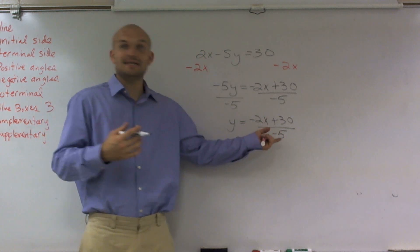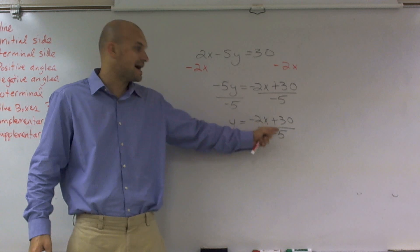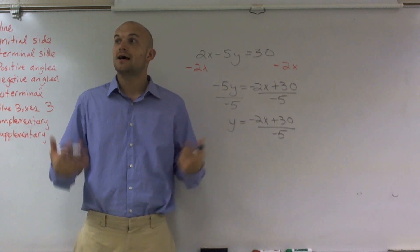Now in the previous example, it was pretty easy because we knew that our number went into both these terms. Here, a negative 5 does not go into both of these numbers.